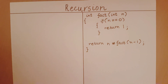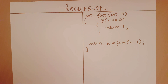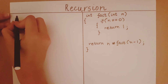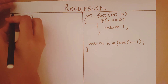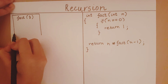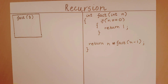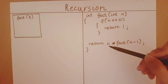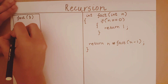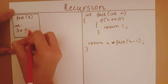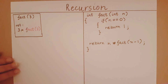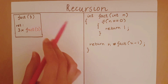Now that we've seen how to write the code, let's see how the output is actually generated. Let's say I want to calculate factorial of 3. I'm going to give a box to this function call. n is equal to 3, it's not equal to 0, so we don't go through that line of code. We have to return n into factorial of n minus 1, so we are returning 3 into factorial of 2. When we write this line, we automatically go into the block of factorial of 2.